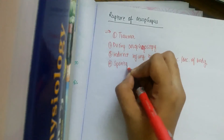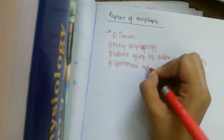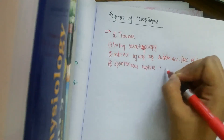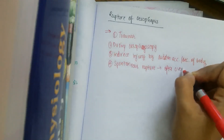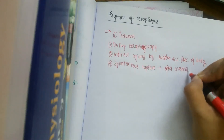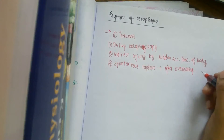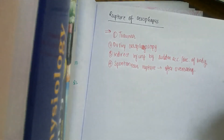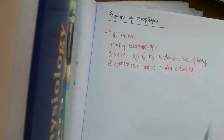Rupture may also be due to spontaneous rupture. This can sometimes occur with overeating, which may lead to rupture of the esophagus. These are the causes related to hematemesis from esophageal rupture.